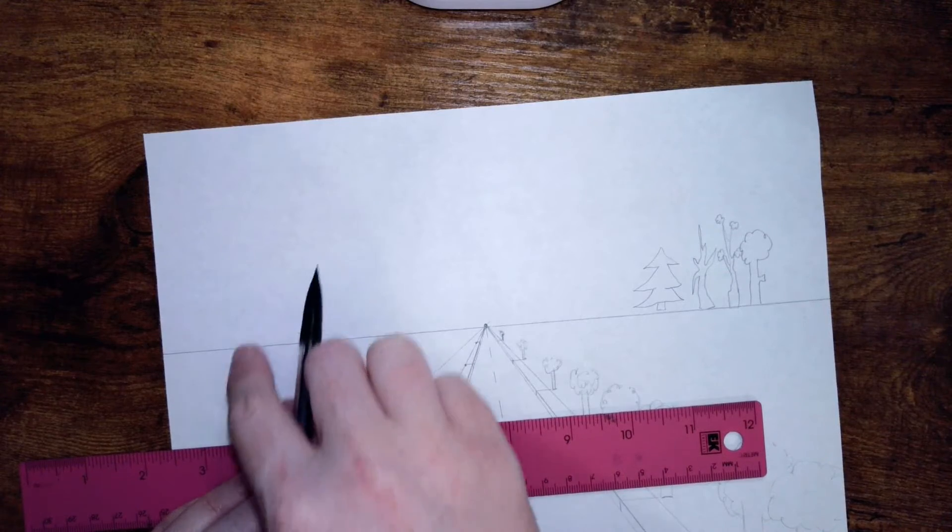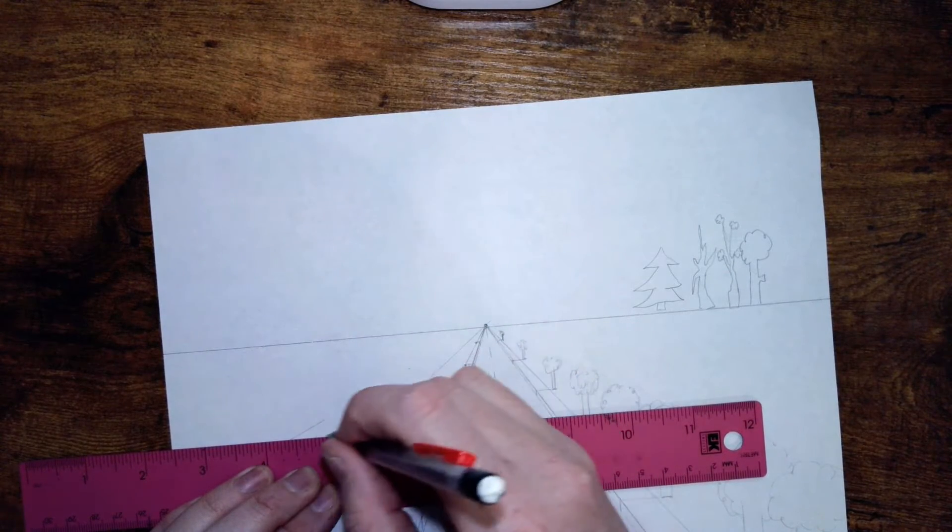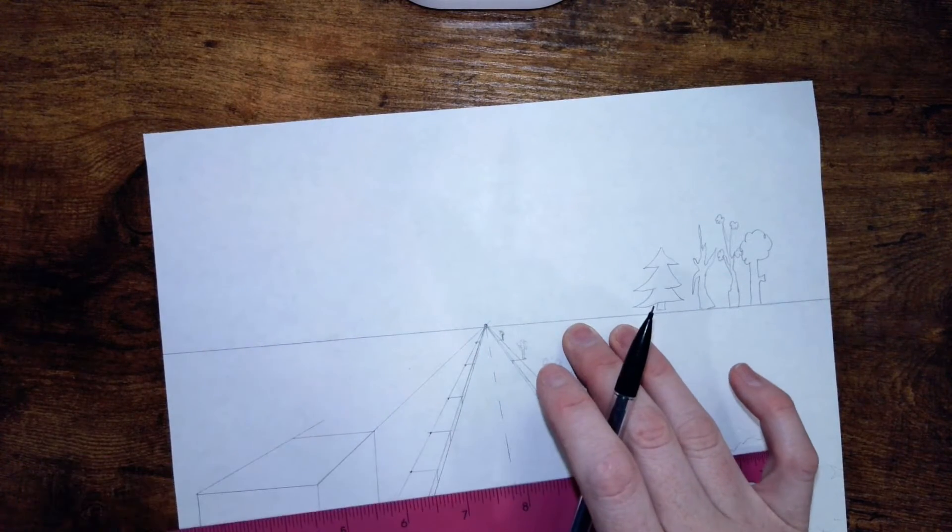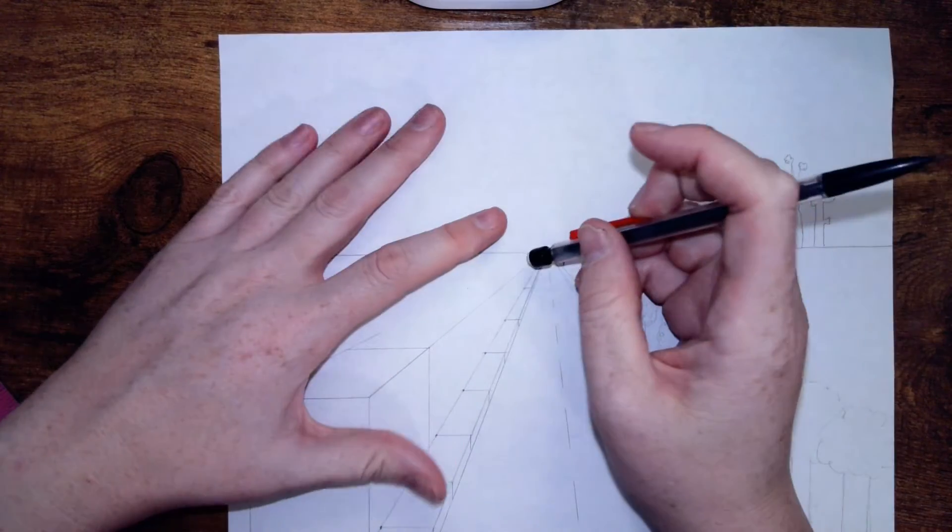Make sure it is completely horizontal and parallel to our horizon line, so it should be the same distance on both sides. Draw a line, and there we are, we have our first building.